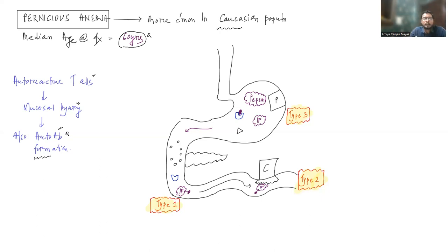We need to understand that, though we study autoantibodies in more detail in this disease — in Pernicious Anemia — it is thought that autoantibodies are not the cause for disease initiation. For disease initiation, the autoreactive T cells are important, and the autoantibodies are actually a byproduct of these reactive T cells. However, these autoantibodies will help us in diagnosing this condition through various serological methods, though they are not the sole pathogenic mechanism.